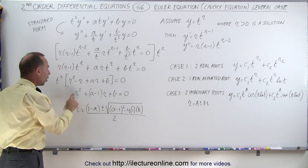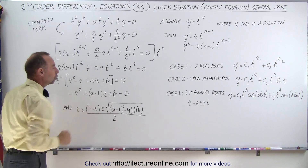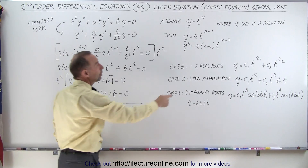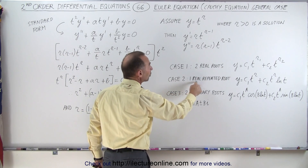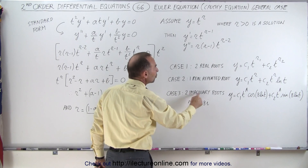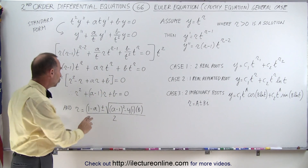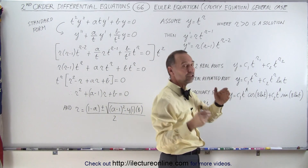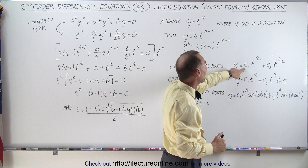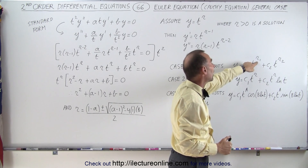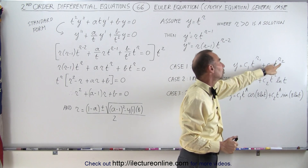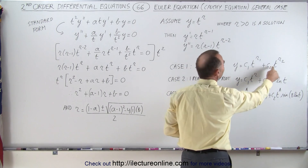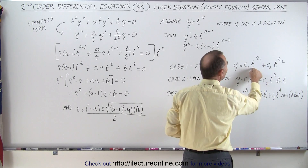Solving for r gives us two solutions. Those two solutions can be either two real roots, a real double root, or two imaginary roots. If we end up with two real roots, the general solution for the homogeneous equation is c1 times t to the r1 power plus c2 times t to the r2 power. It looks very similar to what we've seen before, except instead of e as the base we have t as the base.